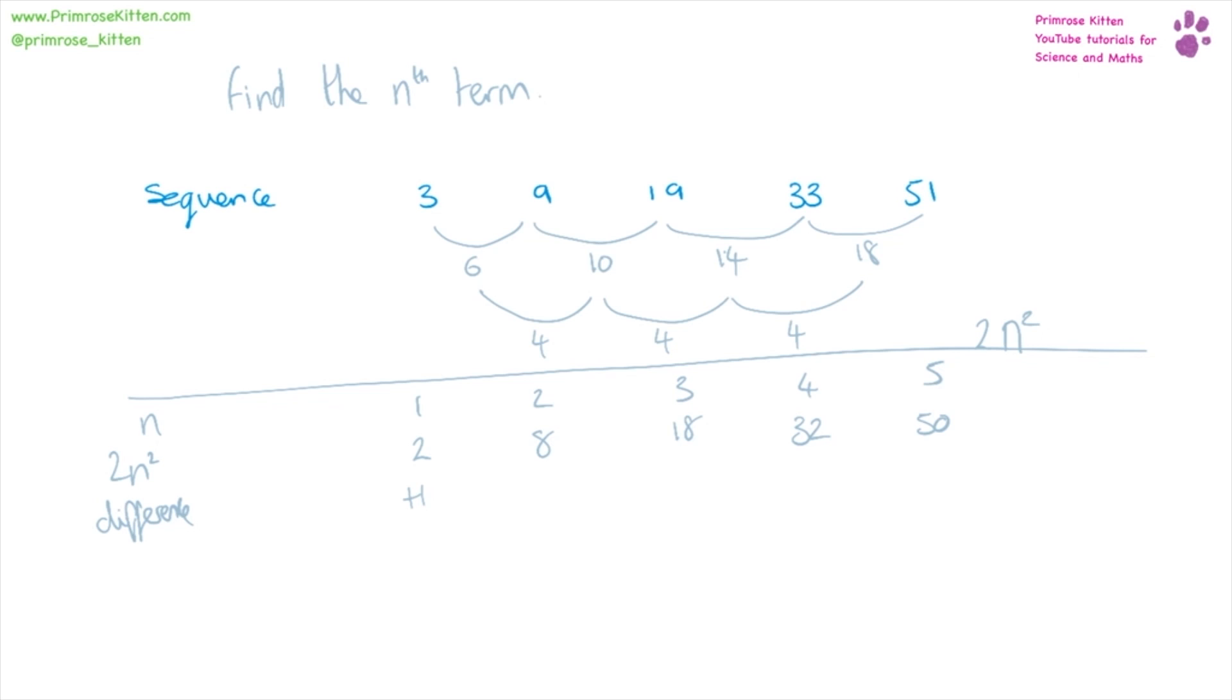To go from 2 to 3 we need to add 1, 8 to 9 we need to add 1, 18 to 19 we need to add 1, 32 to 33 we need to add 1, 50 to 51 we need to add 1.